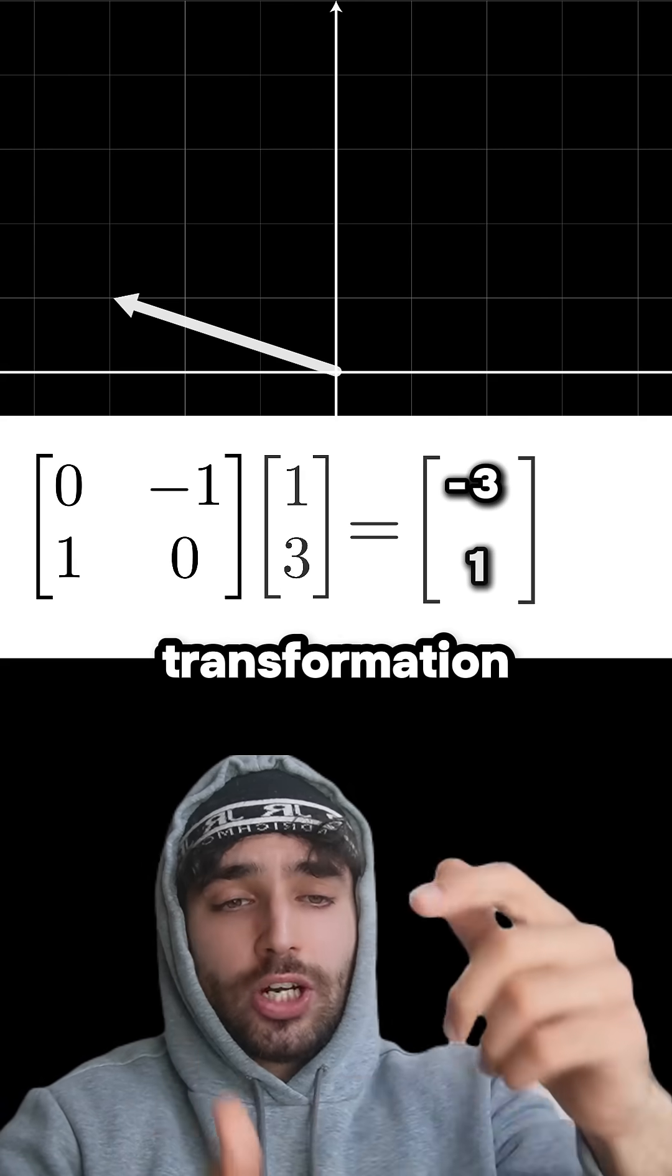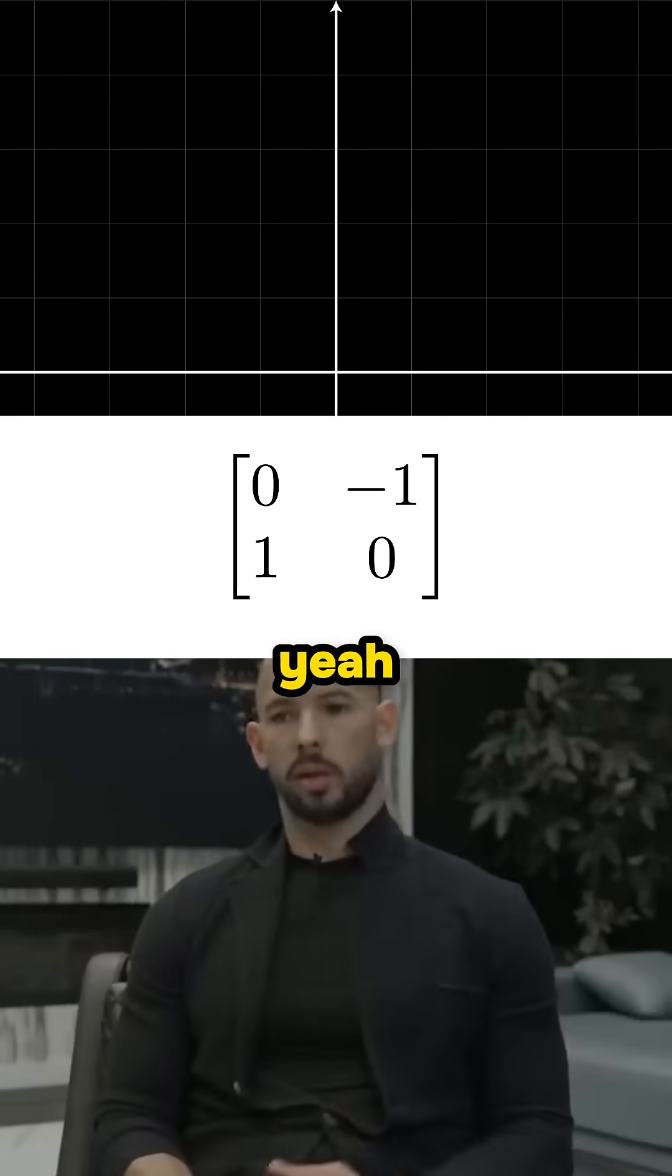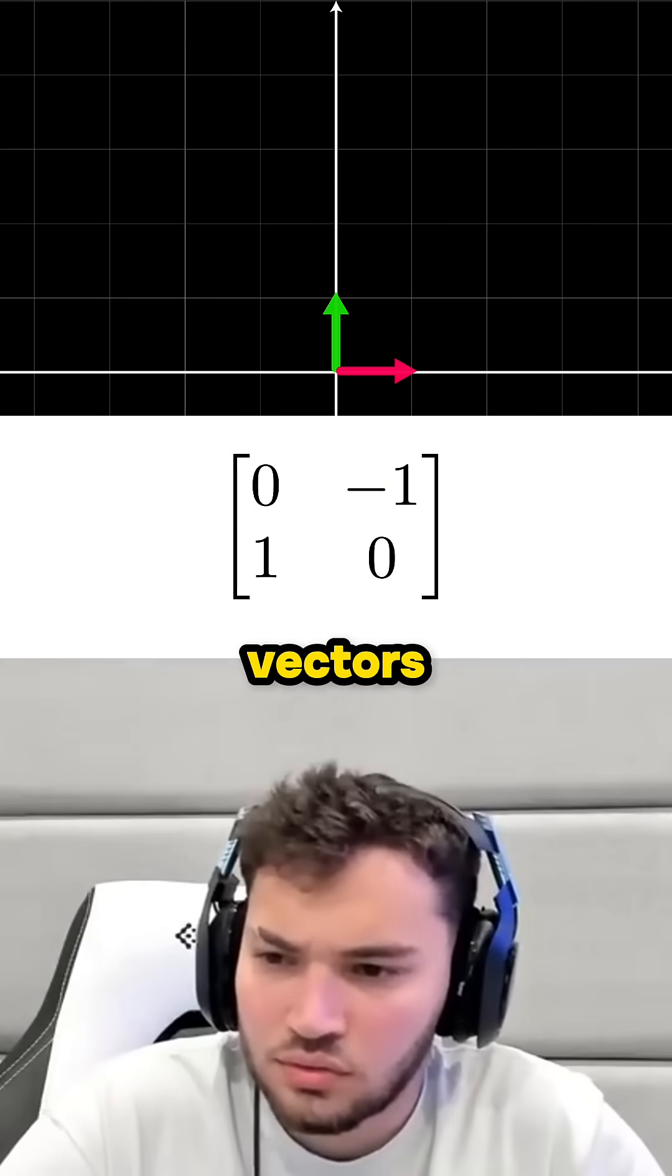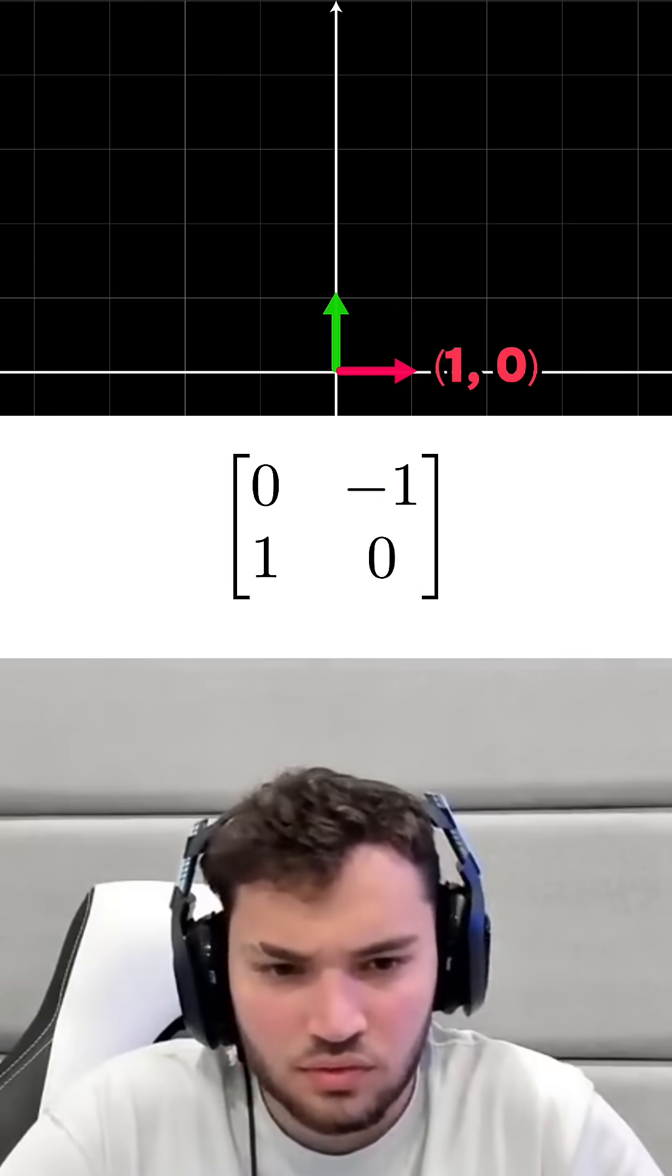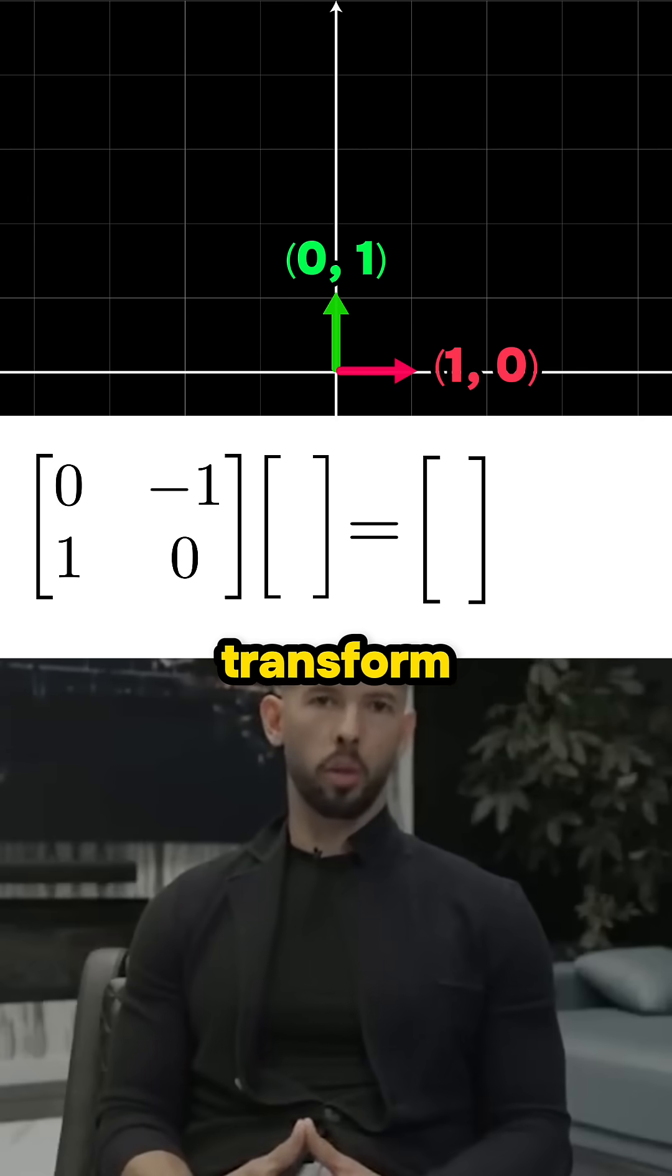Is there a way to know what transformation the matrix is going to do just by looking at it? Yeah, so these red and green arrows are our basis vectors, right? With coordinates (1, 0) and (0, 1). Now watch me multiply the matrix by each one and transform them.